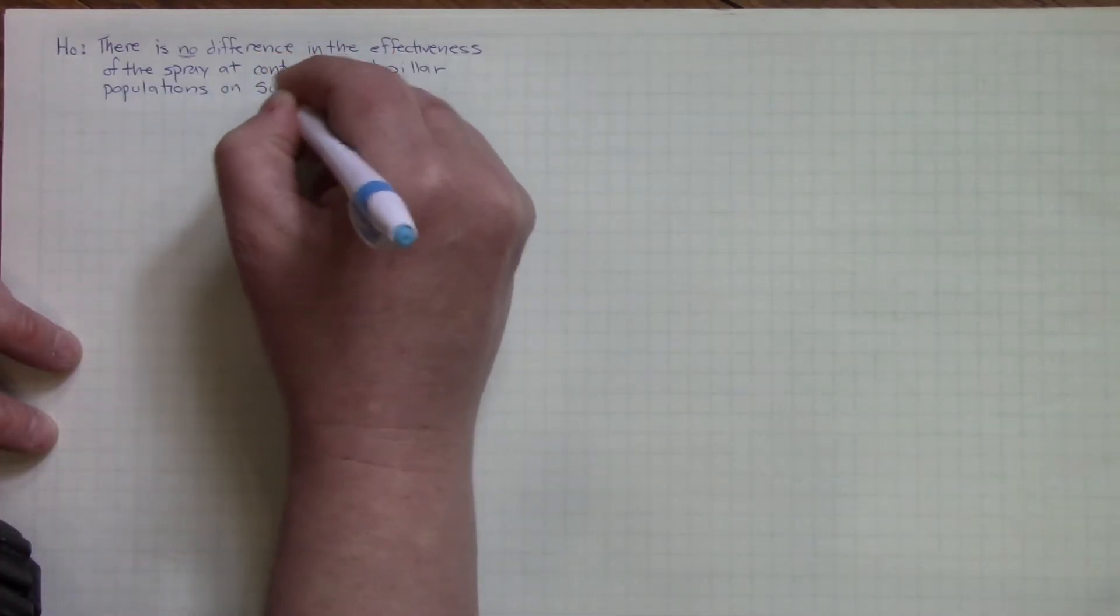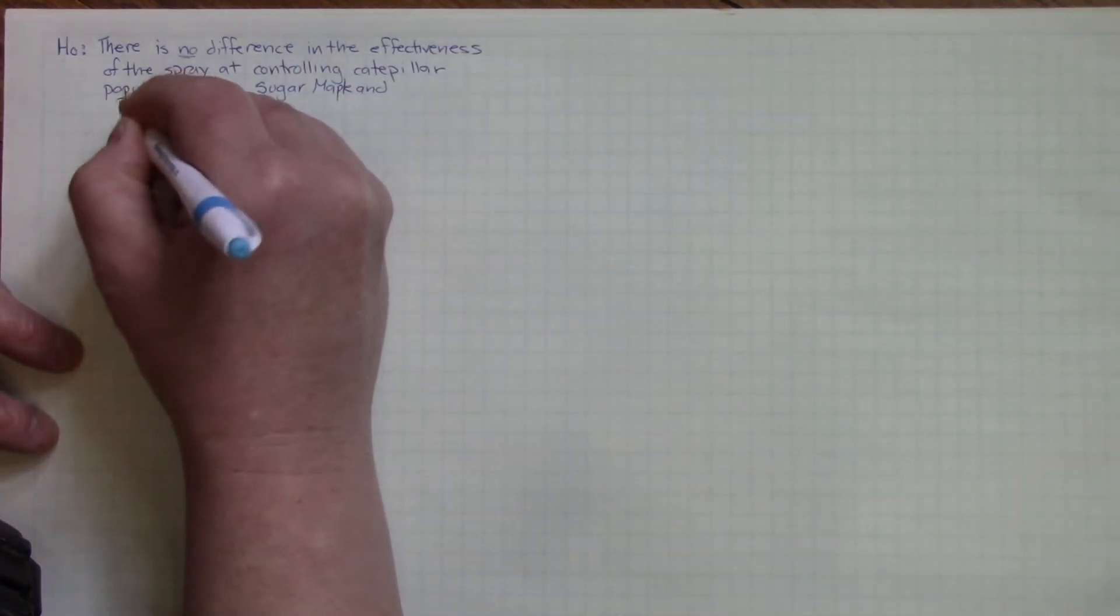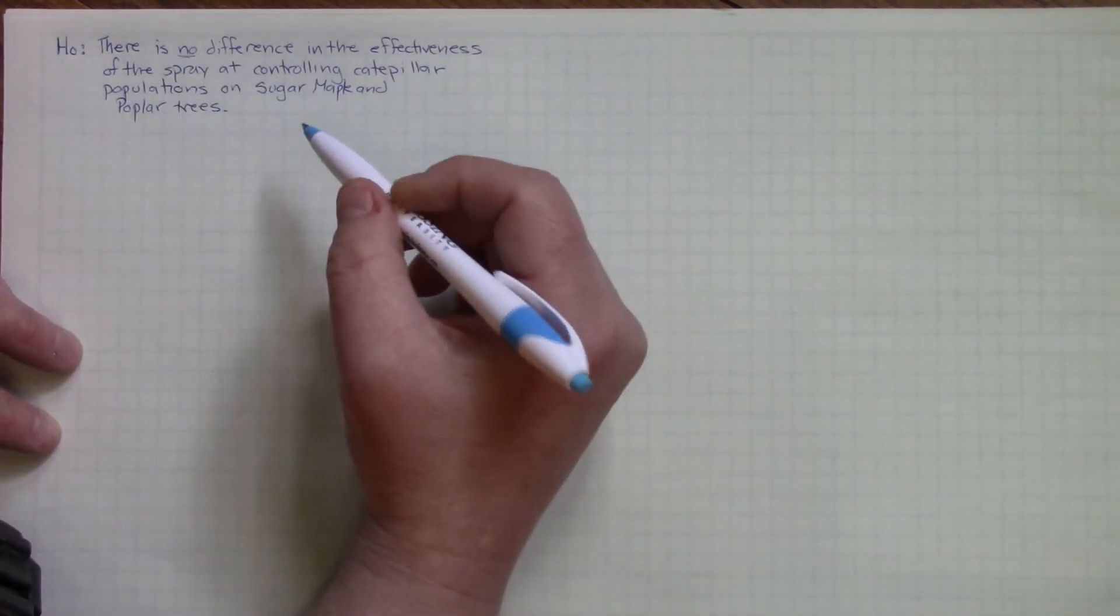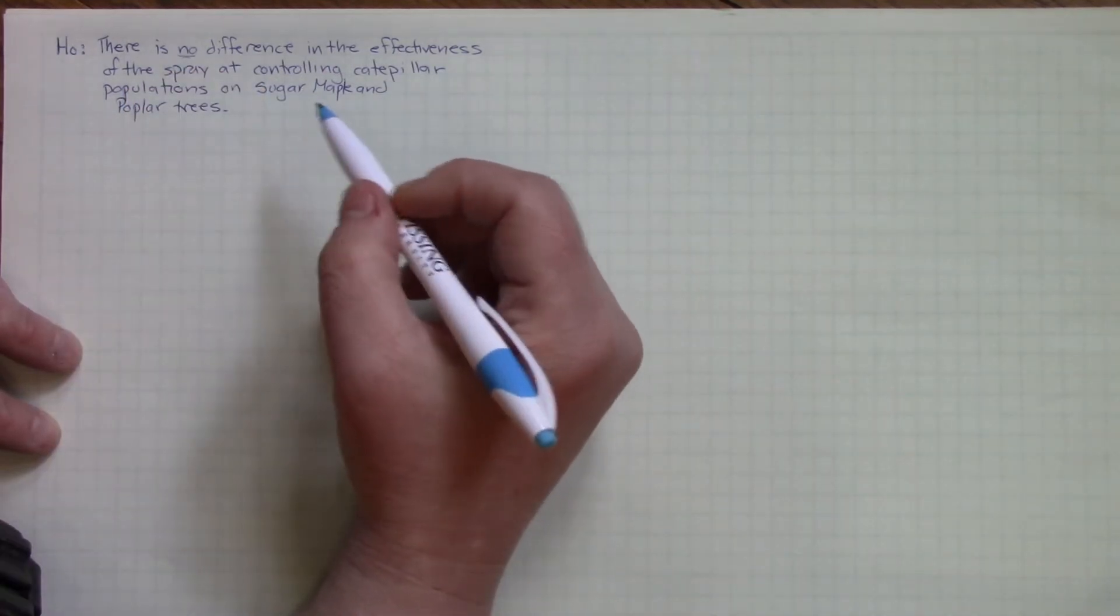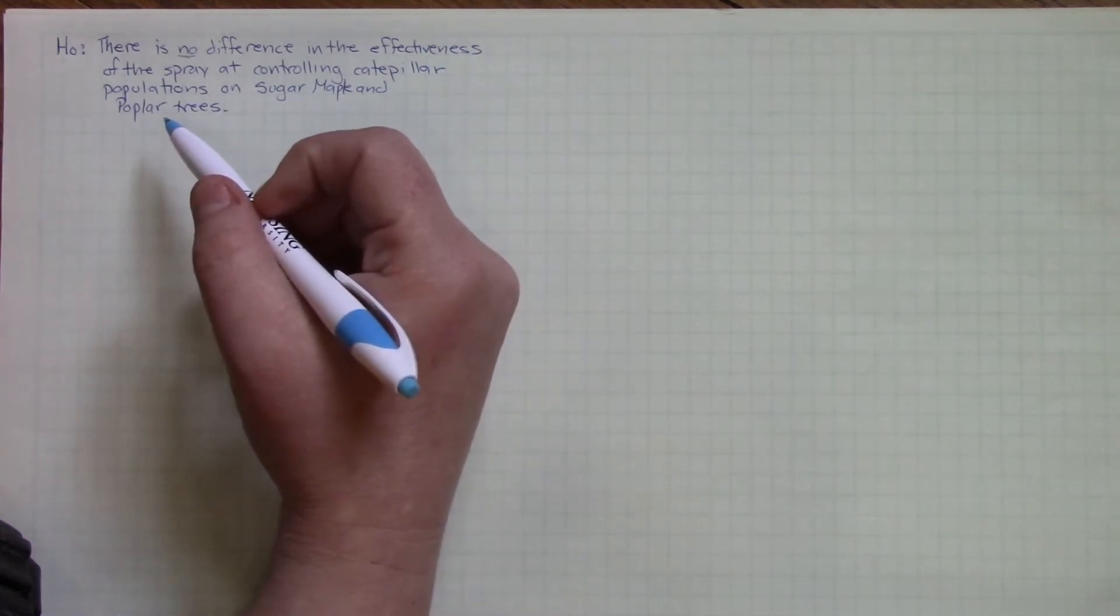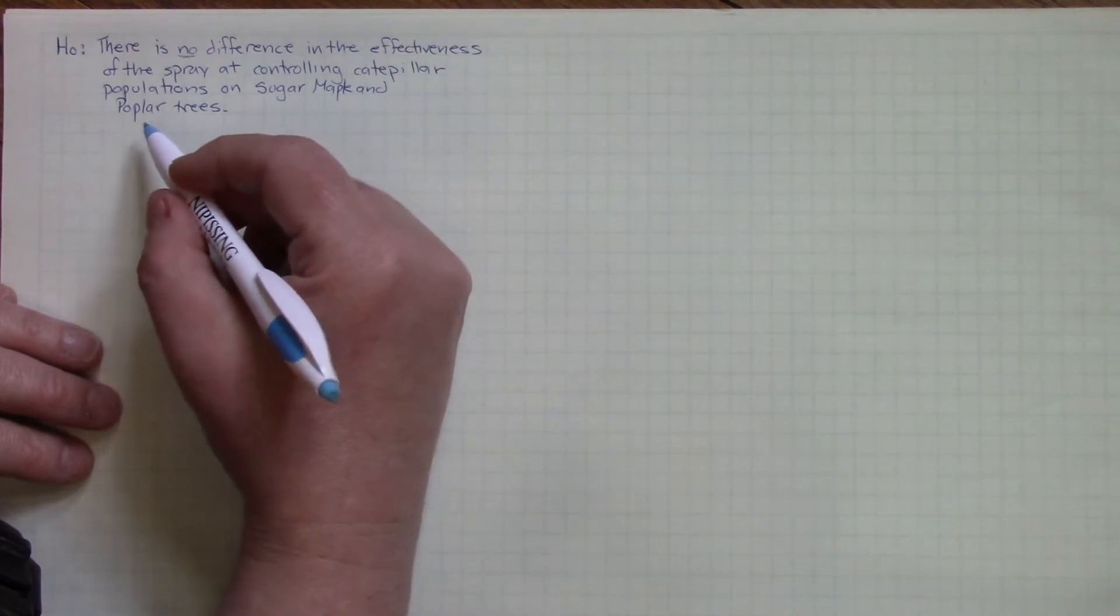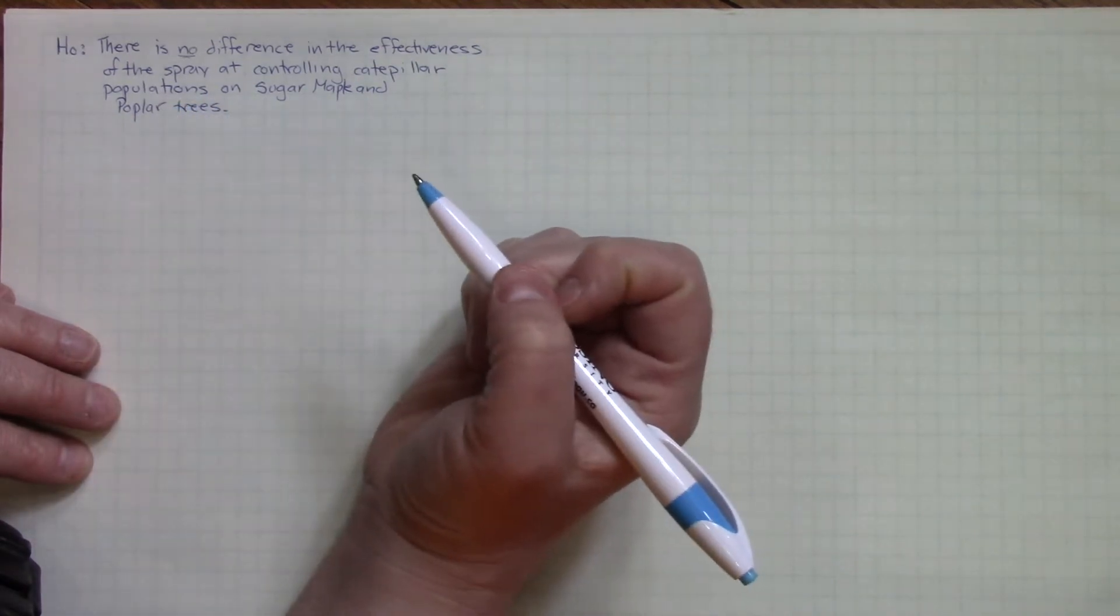Specifically, they mention sugar maple and poplar trees. This bothers me about this particular question because sugar maple is a specific species and poplar is a whole group of species. But that is the parameters we are given.